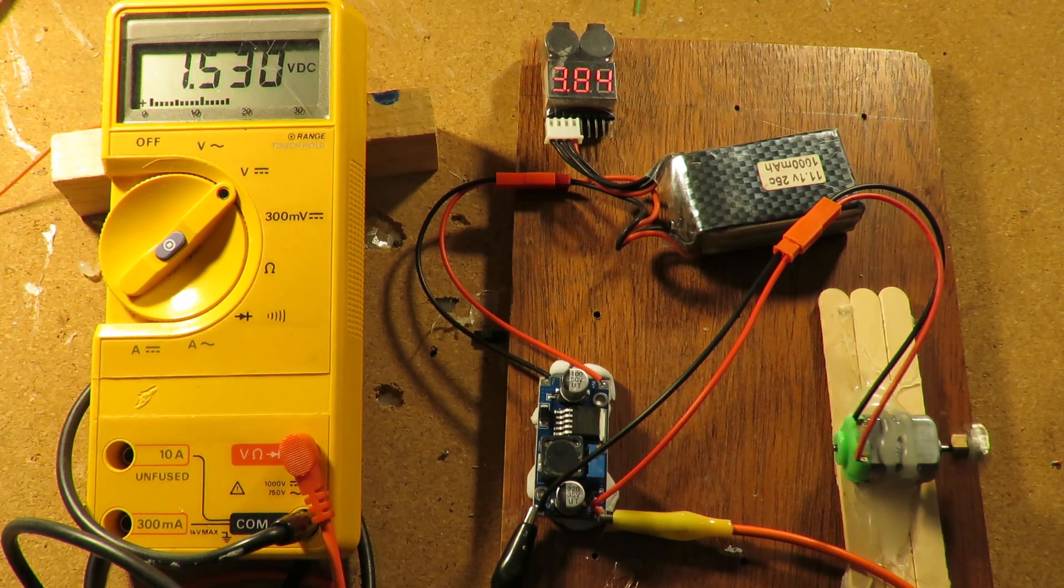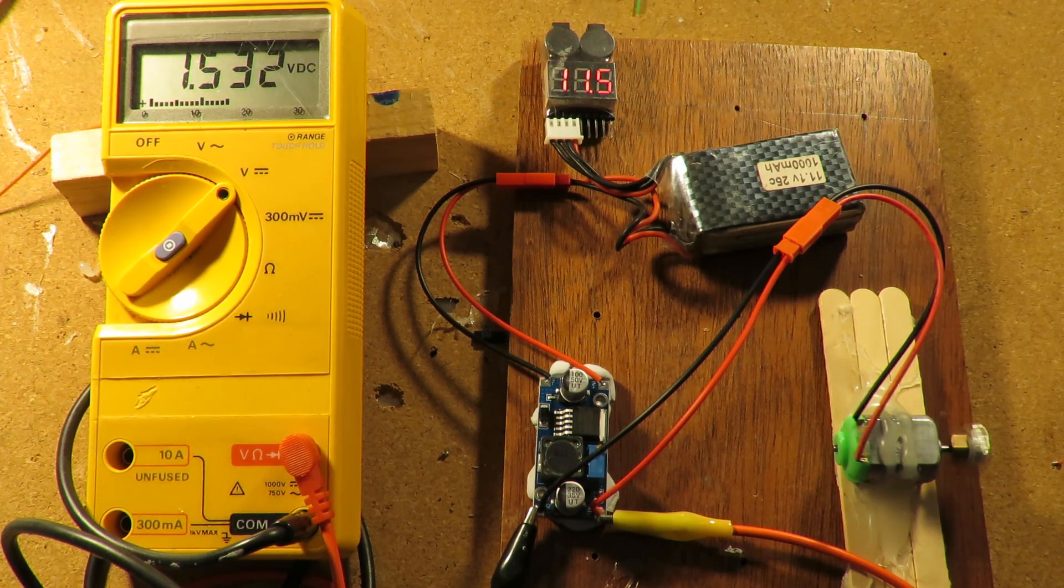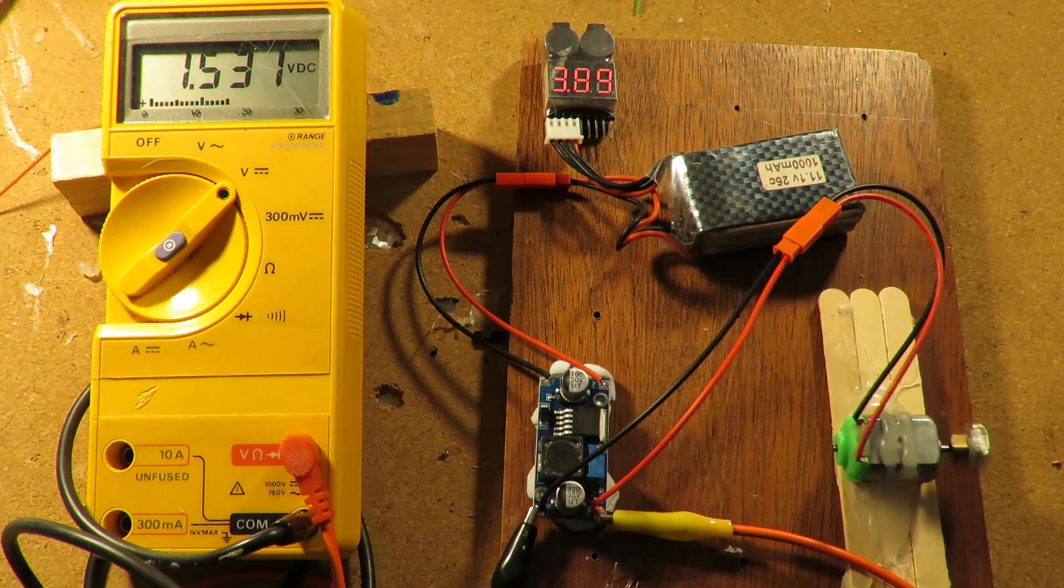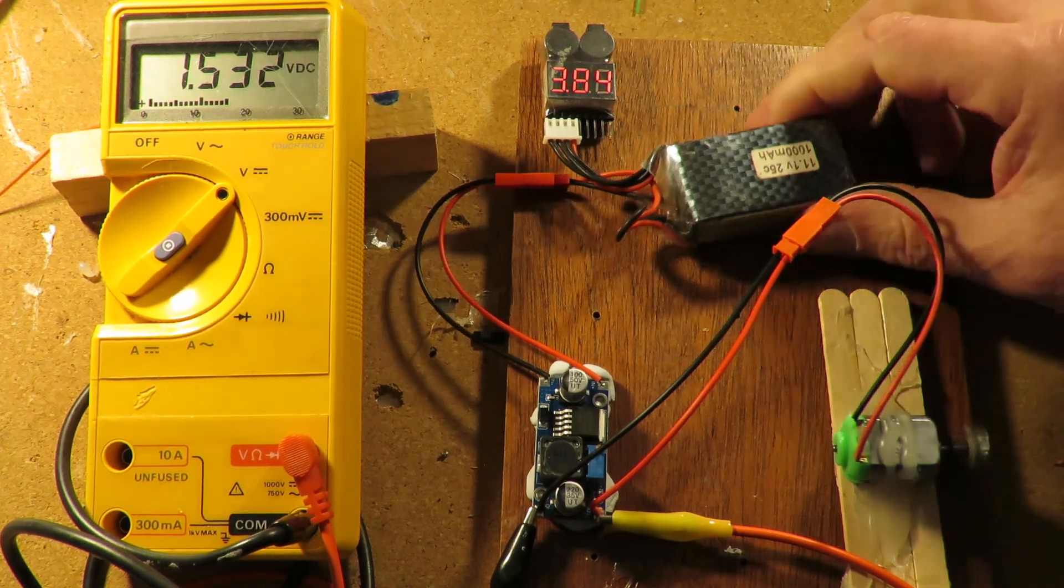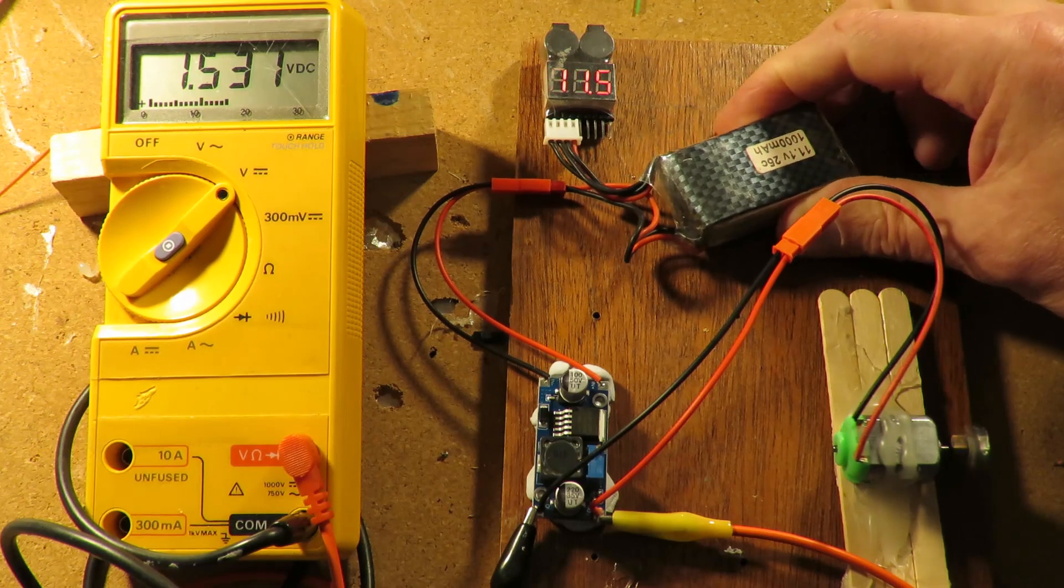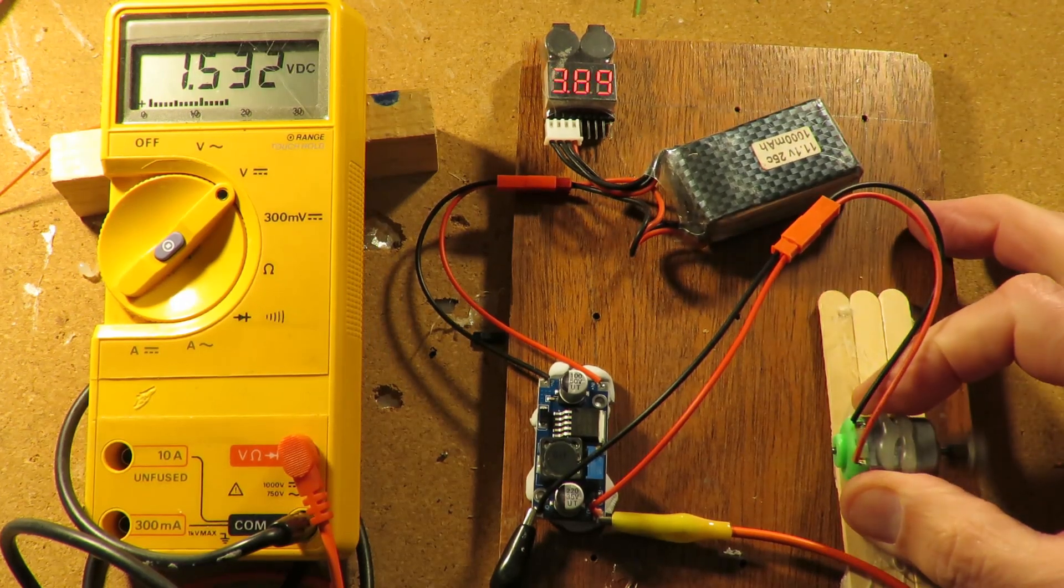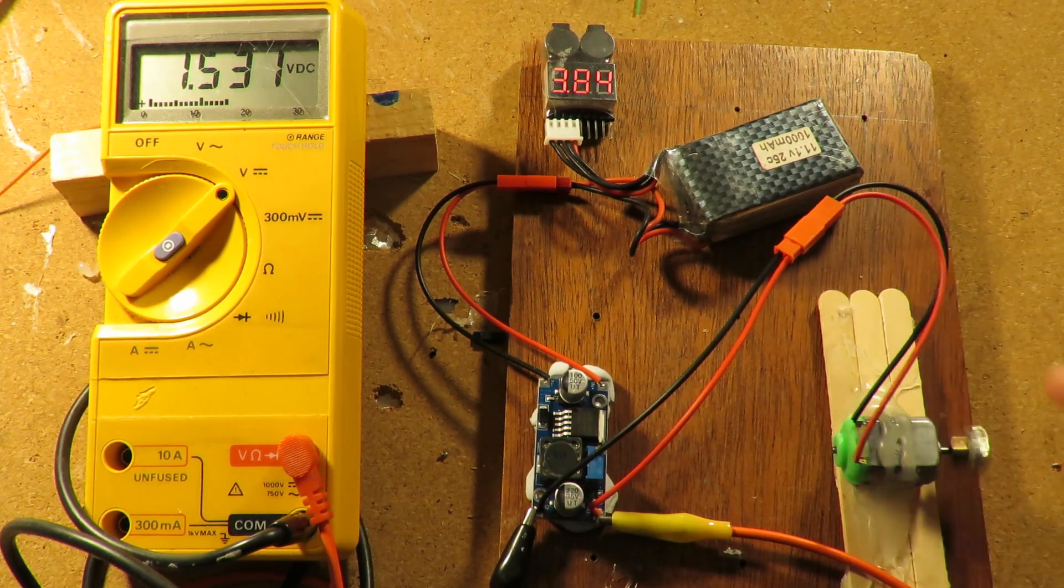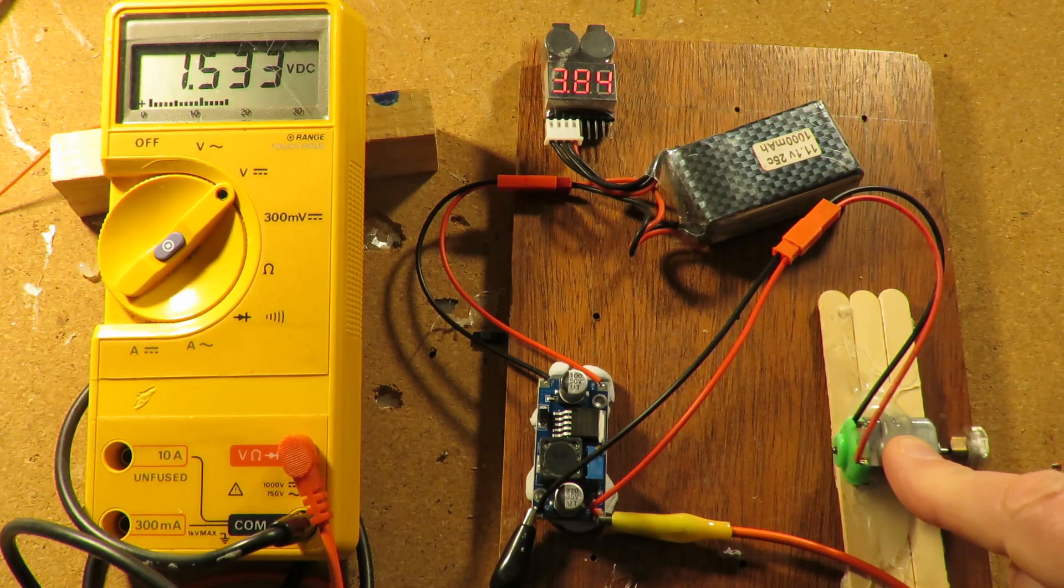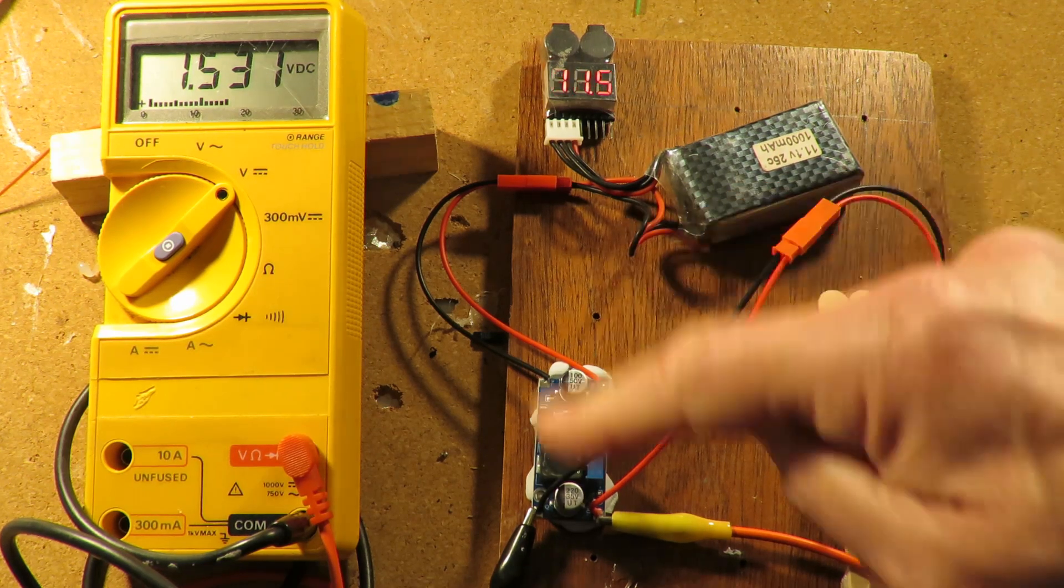So that's a buck converter that you could potentially use if you want to convert your little car to a LiPo battery, but you can't get one that's going to match the voltage that it's expecting. Now, to be honest, it's not the motor you're going to worry about so much, it's the receiver that the current's going through.